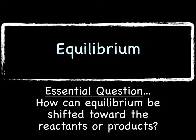Hello, this is Ms. Moore, and today during chemistry we're going to discuss equilibrium. Today's essential question: how can equilibrium be shifted toward the reactants or toward the products? Remember to completely answer the essential question in your summary.